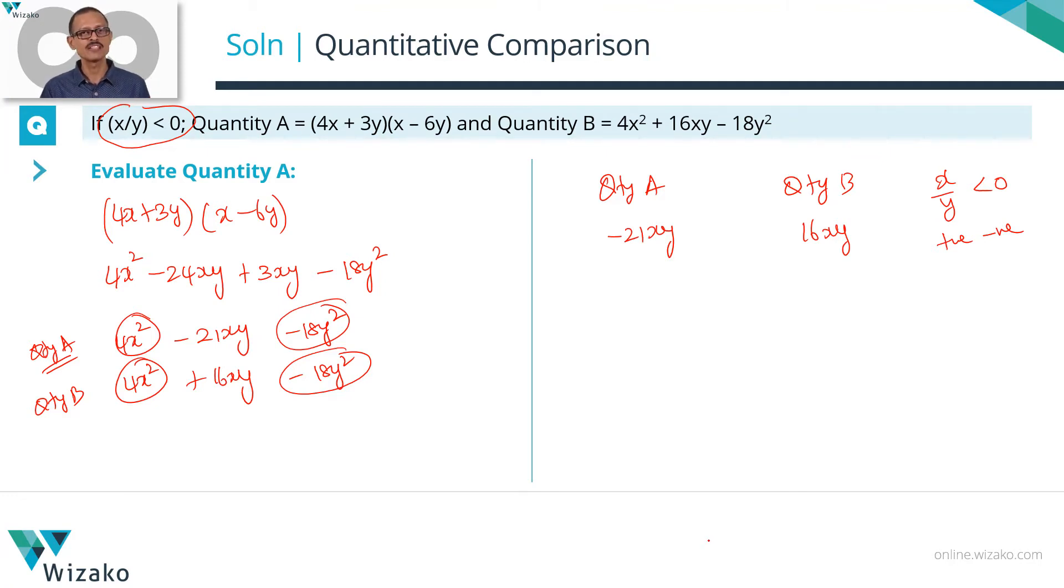Irrespective of whichever number is positive and the other number being negative, the product xy is going to be the product of a positive and a negative number. So that is also going to be negative.